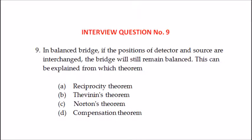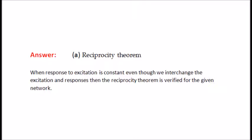Ninth question: in a balanced bridge, if the position of the detector and source are interchanged, the bridge will still remain balanced. This can be explained from which theorem? The options are reciprocity theorem, Thevenin's theorem, Norton's theorem, or compensation theorem. The answer is reciprocity theorem. Because when the response to excitation is constant even though we interchange the excitation and responses, the reciprocity theorem is verified for the given network.